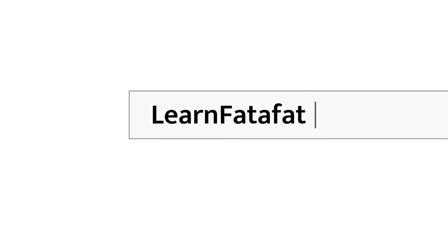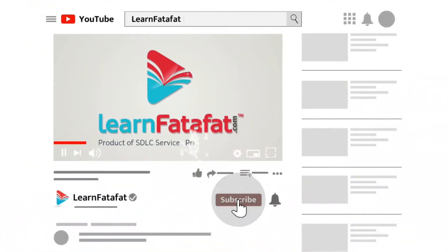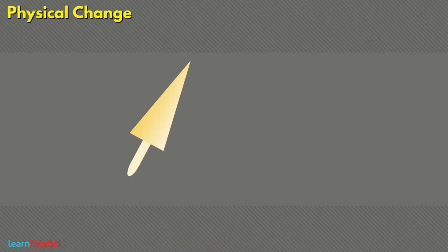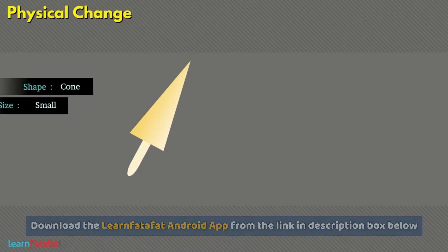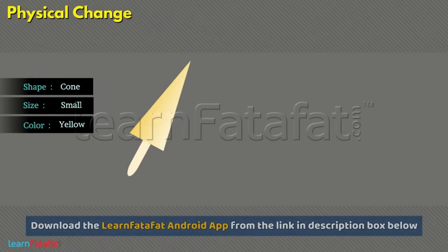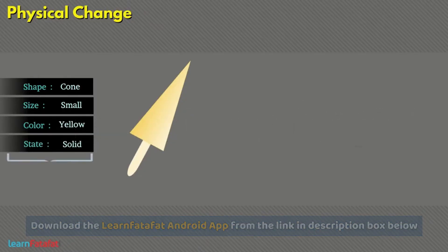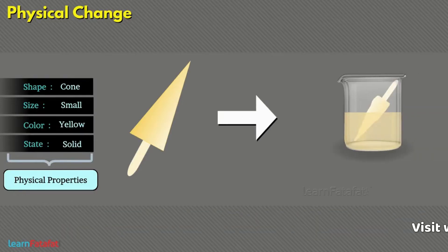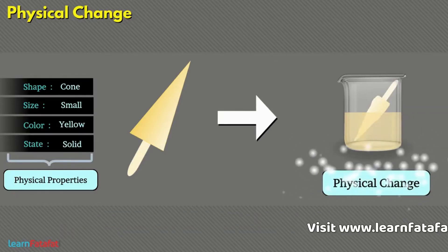Physical change. Normally, substances have properties such as shape, size, colour and state. These are called physical properties. When there is a change in these physical properties, the change is called a physical change.